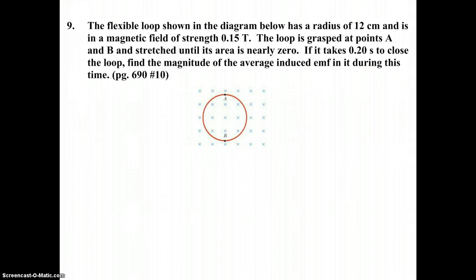Let's get started with number 9. We have a flexible loop shown in the diagram below. It has a radius of 12 centimeters, which is R, and is in a magnetic field of strength 0.15 tesla, so that's the B value.